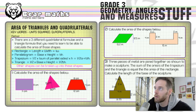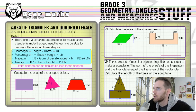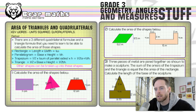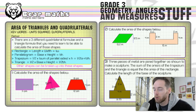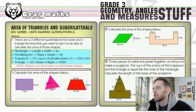Welcome to video number 143. This video is on area of triangles and quadrilaterals. Keywords here are 'unit squared' — the way in which we give our answers to area questions — and 'quadrilaterals,' meaning four-sided shapes. There are three different quadrilateral formulae and a triangle formula that you need to learn.